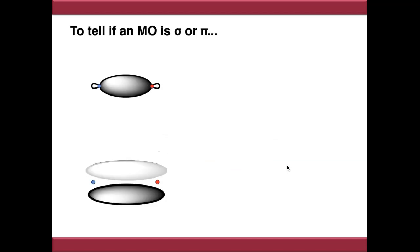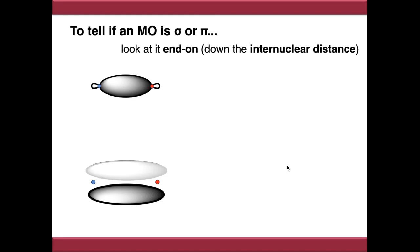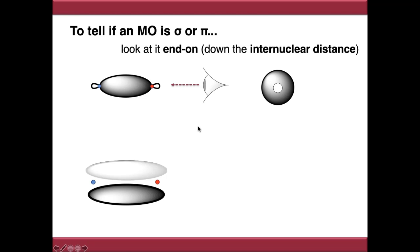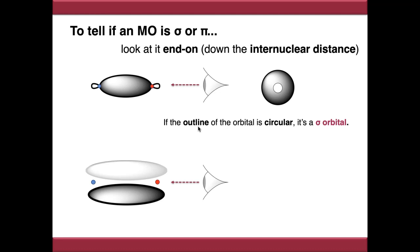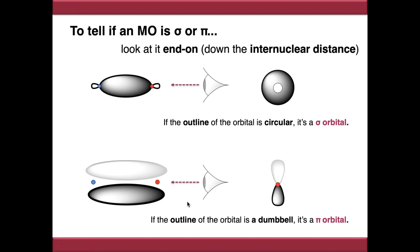A quick rule of thumb: if you're not sure whether a molecular orbital is sigma or pi, look at it end-on, down the internuclear distance. If you imagine looking down the internuclear distance between the two atoms - if the orbital looks circular or spherical, it's a sigma orbital. If it looks like a figure of eight or a dumbbell, it's a pi orbital. That's a quick and easy way of telling whether you've got a sigma or pi orbital.